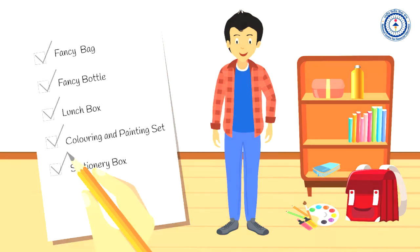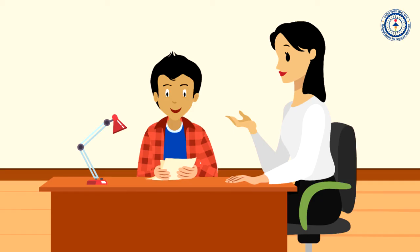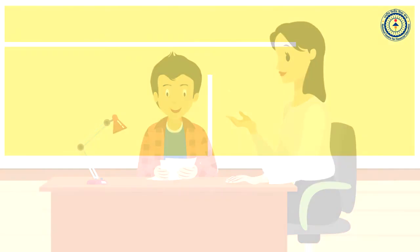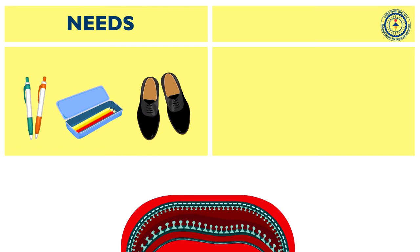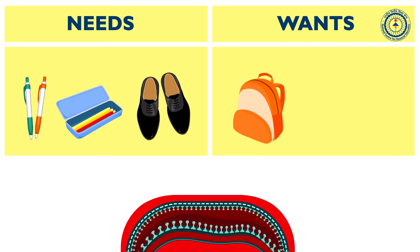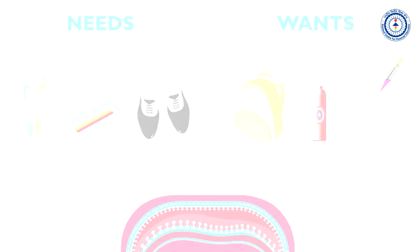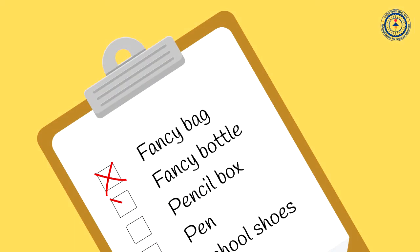Praveen and his mother then make a list of his needs and wants. Needs: pens, pencil box, school shoes. Wants: new fancy bag, new fancy bottle, branded cricket bat. Praveen agrees with his mom that he does not need a new fancy bag or a new bottle.